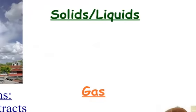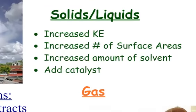Also, how do we get solids or liquids dissolved? We've got four things. We want to increase the kinetic energy, either put in some heat, or we want to stir it around or agitate it. We could increase the number of surface areas, that's a fancy term for crushing it down. We could increase the amount of solvent, put more water in it, or we could add a catalyst.